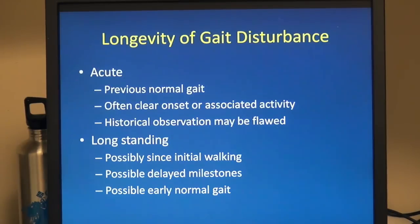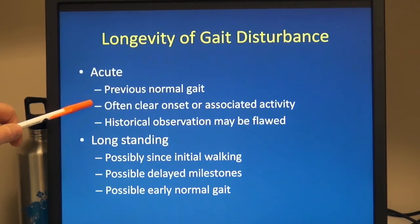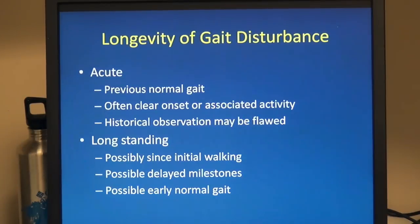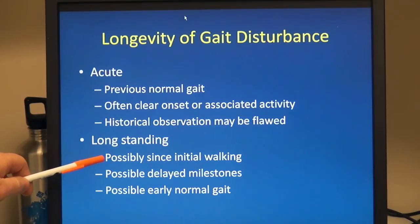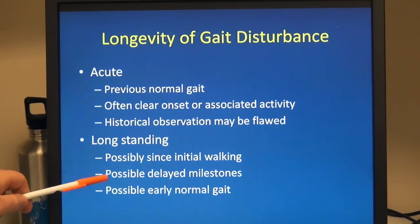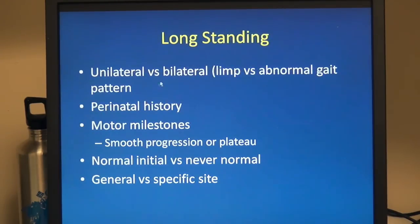If we look at the longevity of gait disturbance, with acute changes they often have a previously normal gait and a clear onset or associated activity, but historical observations can be flawed. The more long-standing gait patterns may be present since initial walking, or they may have developed over a long period of time until hitting a threshold of being noticed. They may have delayed milestones or not, but may have had an early normal gait. Long-standing gaits can be either unilateral or bilateral — a limp versus a global abnormal gait pattern.